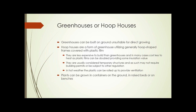Greenhouses or hoop houses can be built on ground that's unsuitable for direct growing — paved ground or brownfields. Hoop houses are a form of greenhouse utilizing hoop-shaped frames covered with plastic film. They're less expensive to build than greenhouses and often cost less to heat, since the plastic films can be doubled to provide some insulation value. Another benefit is they're usually considered temporary structures and may not require building permits or be subject to the same regulations as a regular building. In hot weather, the plastic can be rolled up on the sides to provide ventilation.